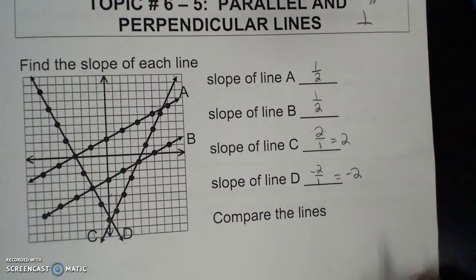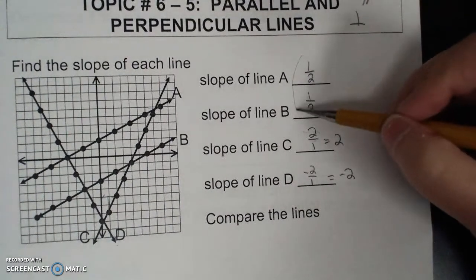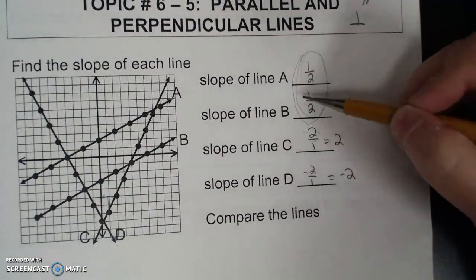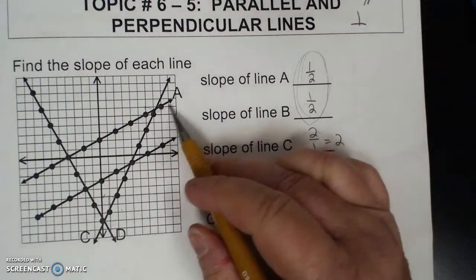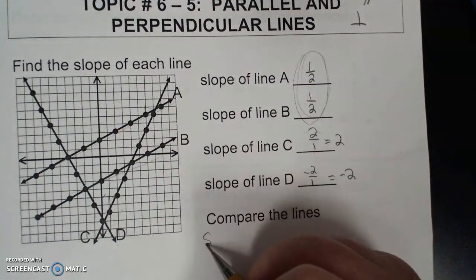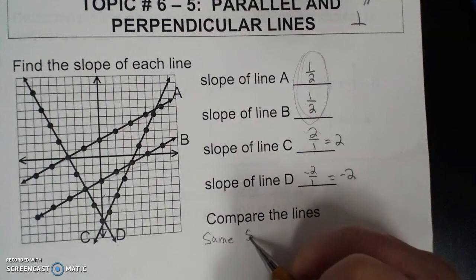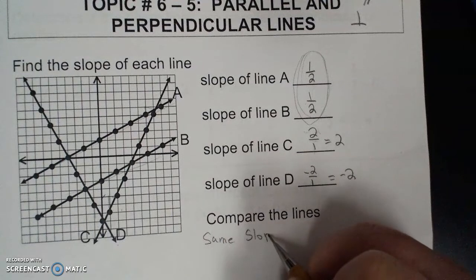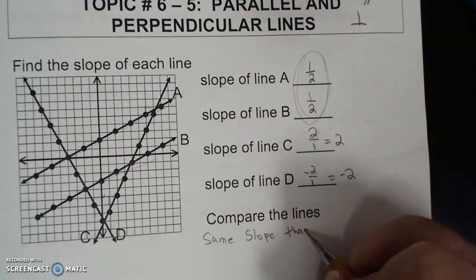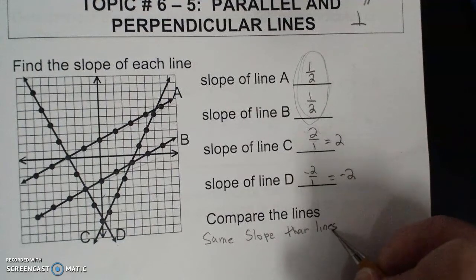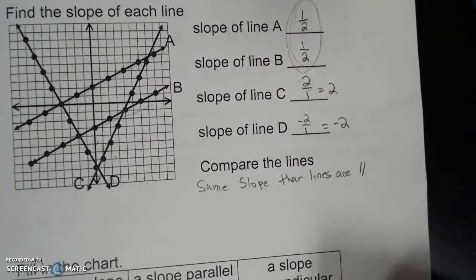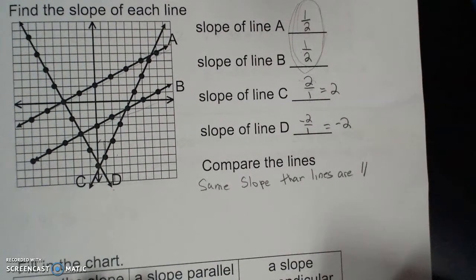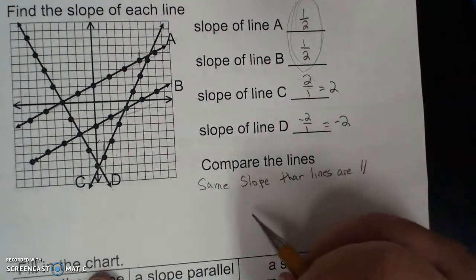Compare the lines. Notice that A and B have the same slope. When you have the same slope — same slope, different y-intercept — the lines are parallel.